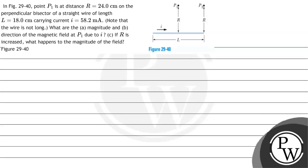Hello bachon, let's read the question. The question says: in figure 29.40, point P1 is at distance R equal to 24 centimeter on the perpendicular bisector of a straight wire of length L equal to 18 centimeter, carrying current I equal to 58.2 milliampere. Note that the wire is not long. What are (A) the magnitude and (B) the direction of the magnetic field at P1 due to I? (C) If R is increased, what happens to the magnitude of the field? Figure 29.40 is given to us.